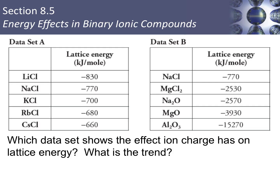Now let's look at the effect ion charge has on lattice energy. Data set B shows this relationship. Aluminum oxide has the largest lattice energy — aluminum has a +3 charge and oxygen has a −2 charge as ions. These larger charges produce a stronger force of attraction between the ions, giving a large lattice energy. Sodium and chlorine are +1 and −1 respectively, and you'll see the lowest lattice energy there because those charges are not as high.